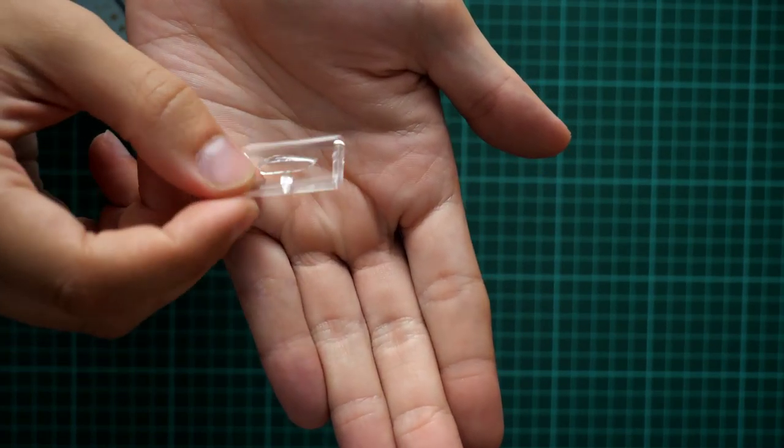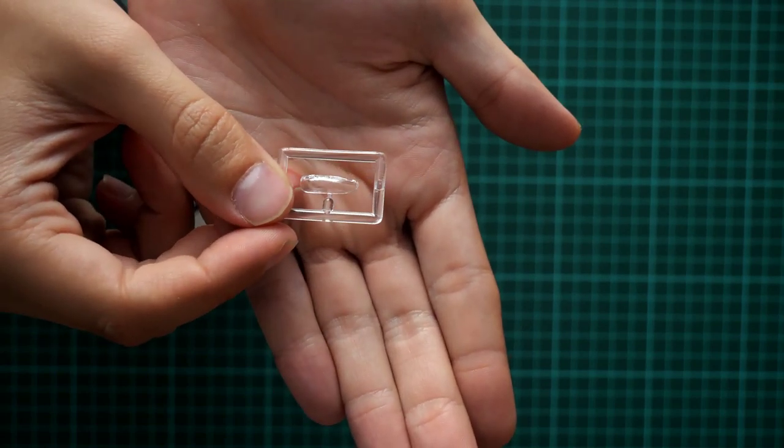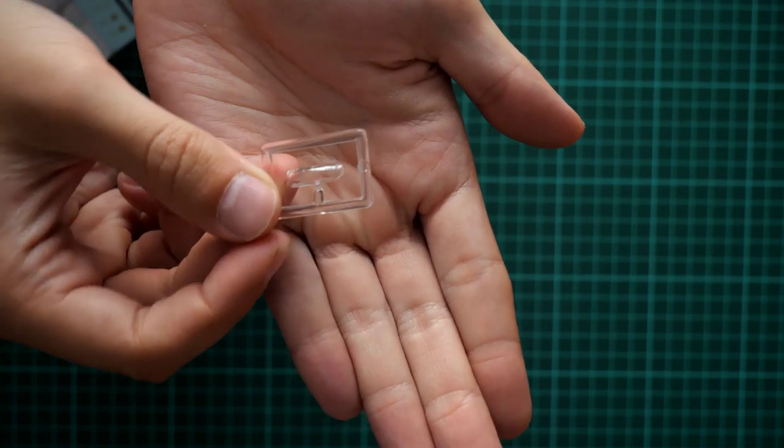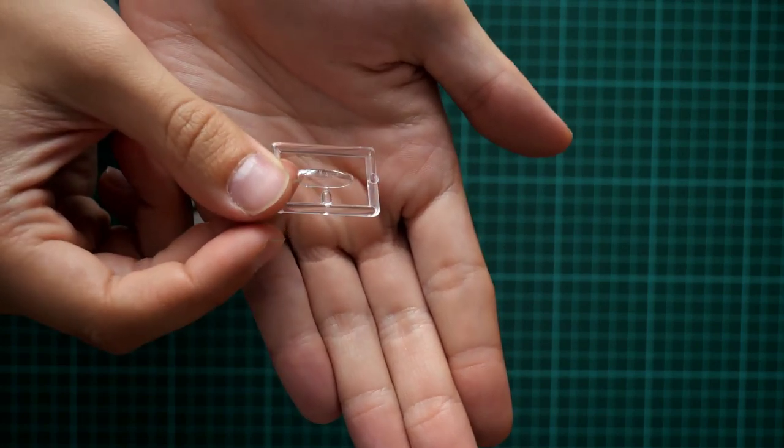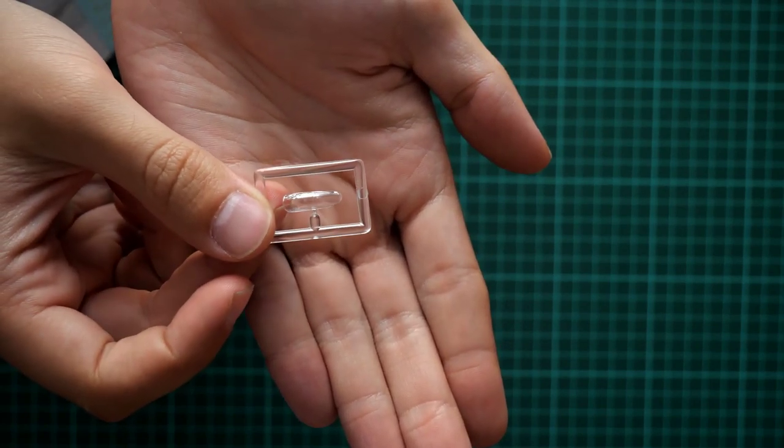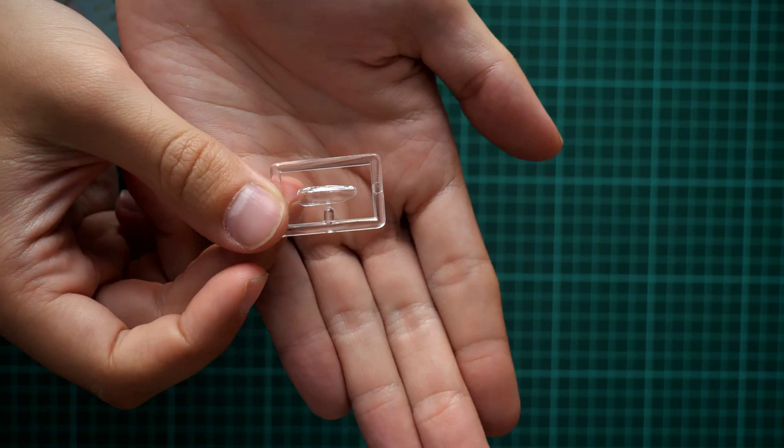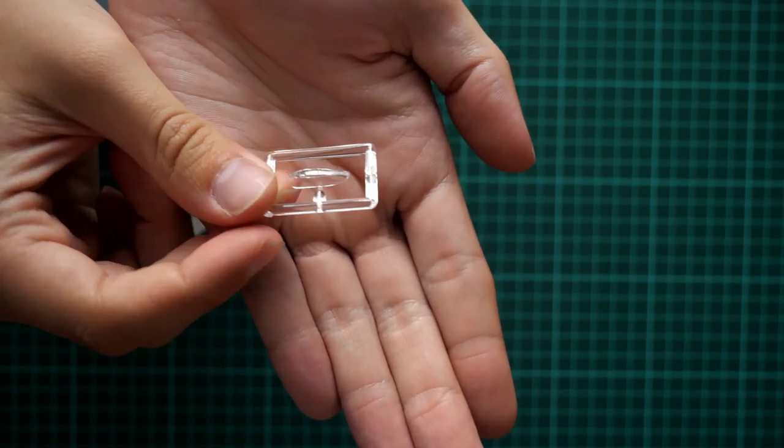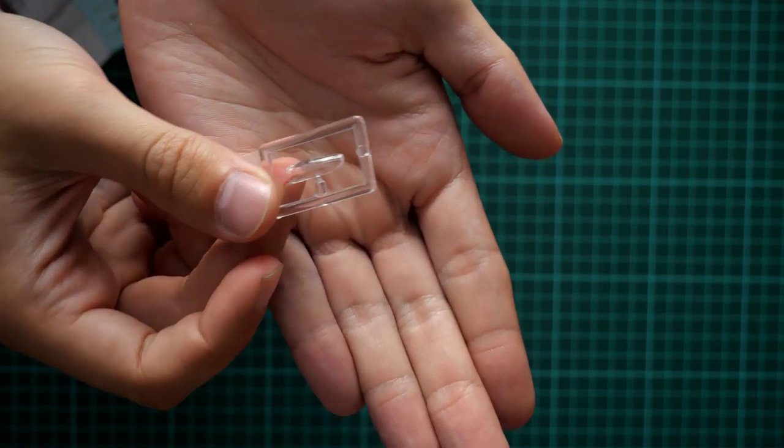I'm not sure if there will be some aftermarket set. Usually Brengun manufactures some mask set for its own kits. So I guess there is a good chance that you will be able to buy a separate mask set and then use it on this small Airacobra.